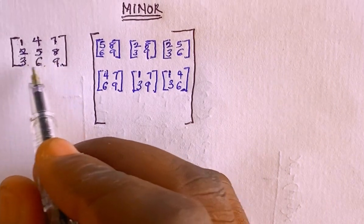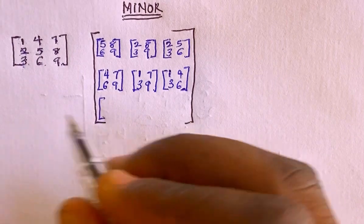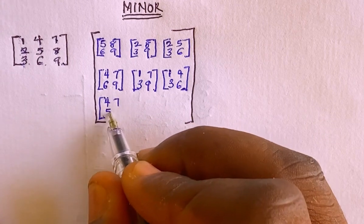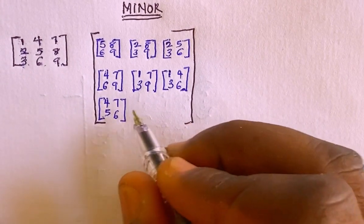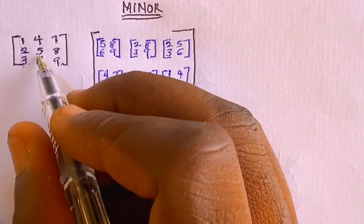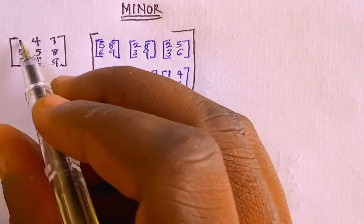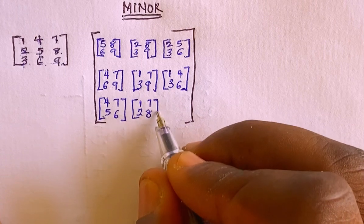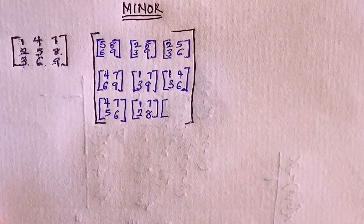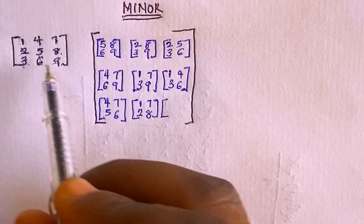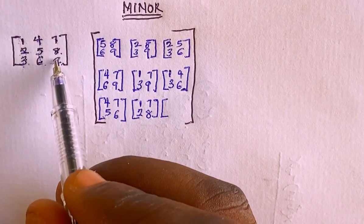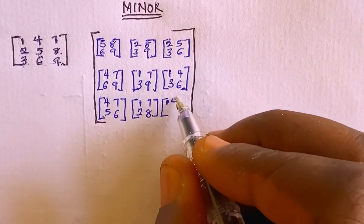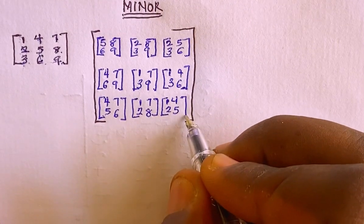Then for the last row and last column elements: for 3, I'll neglect its row and column and I'm left with 4, 5, 7, 6. For 6, I'll neglect its row and column and I'm left with 1, 2, 7, 8. For 9, neglecting its row and column, I'm left with 1, 2, 4, 5. So each element in the matrix now has a corresponding 2x2 sub-matrix.